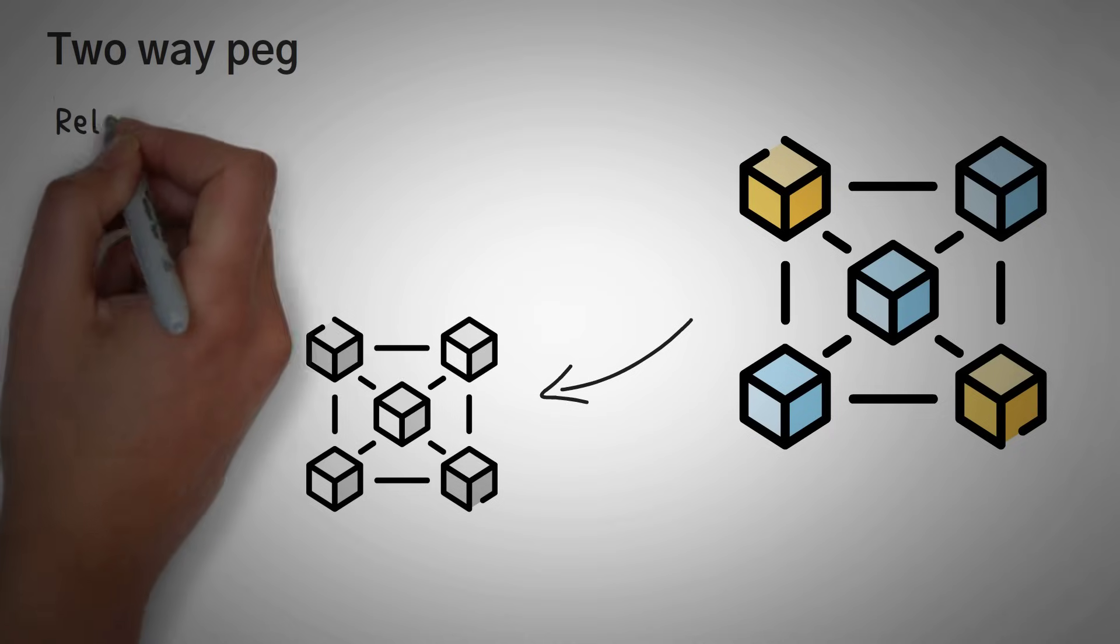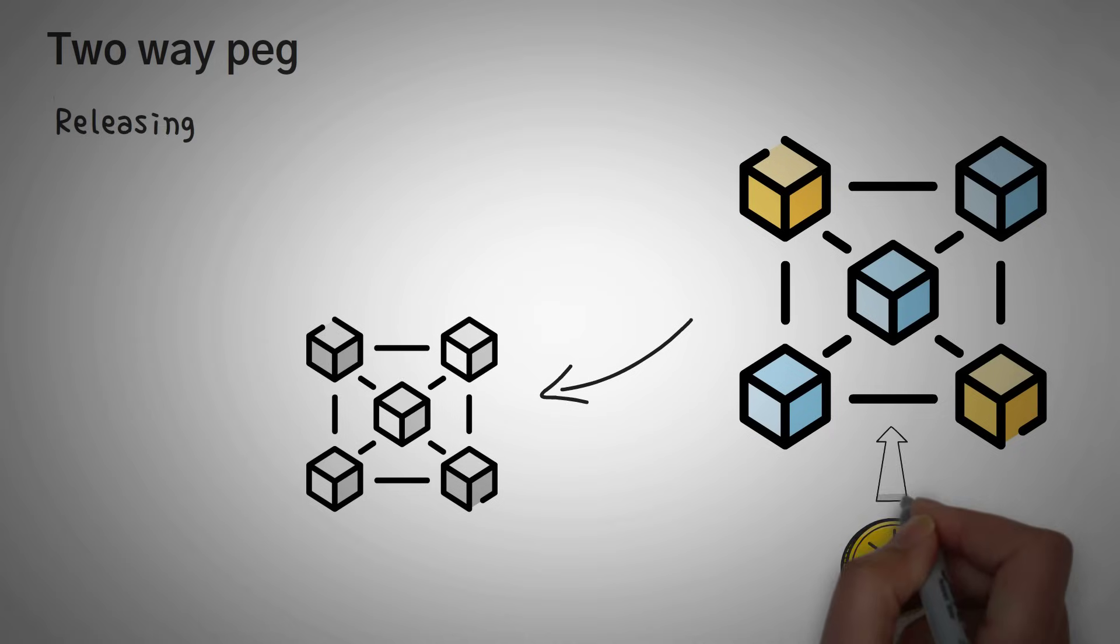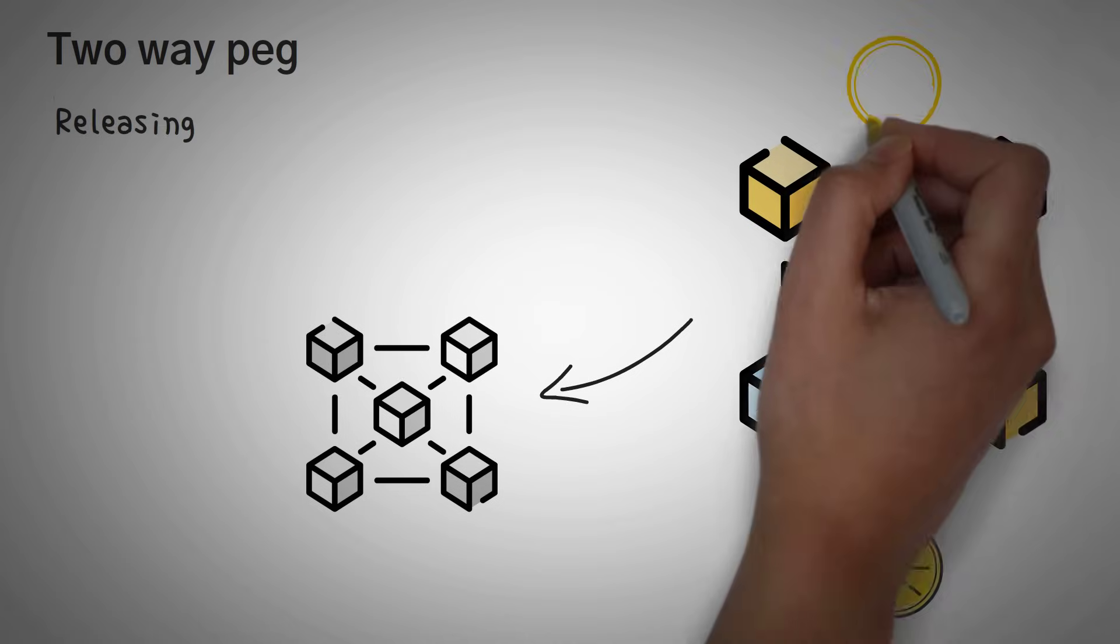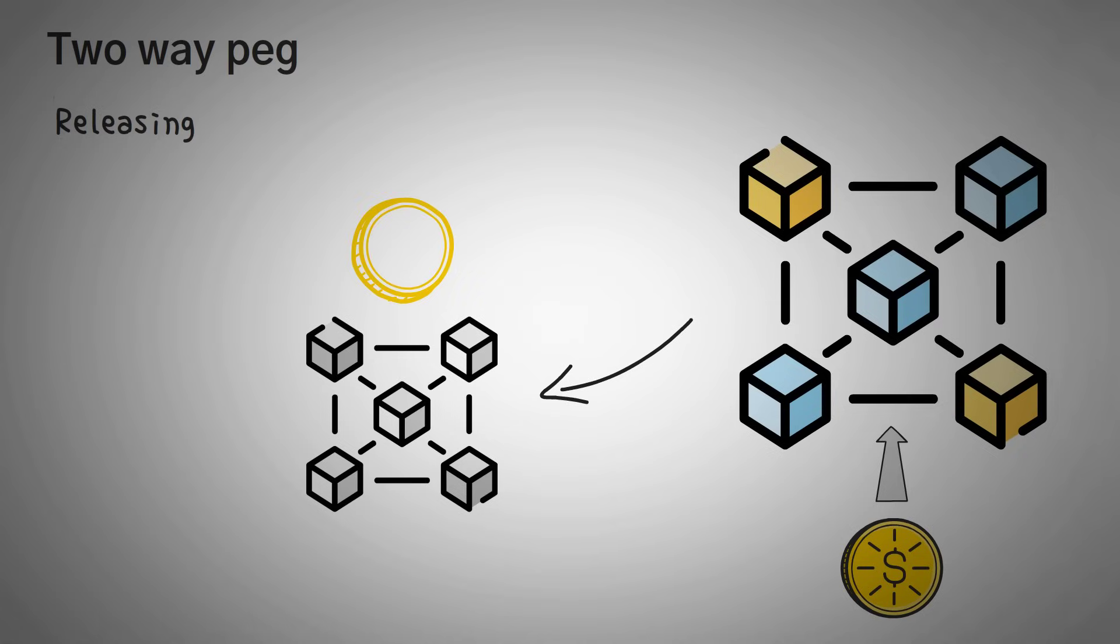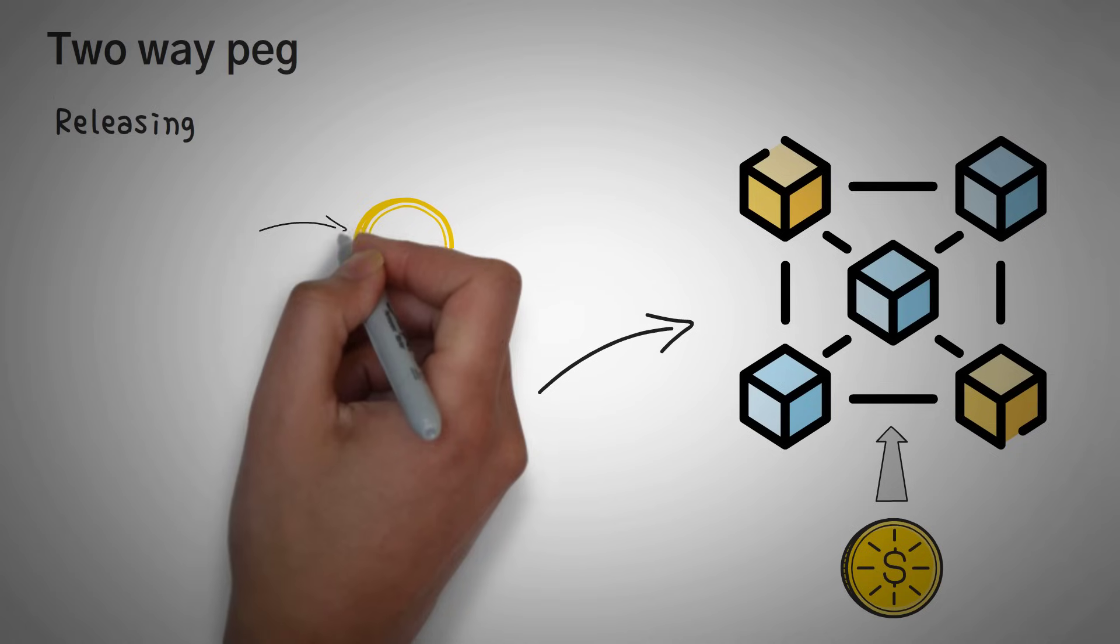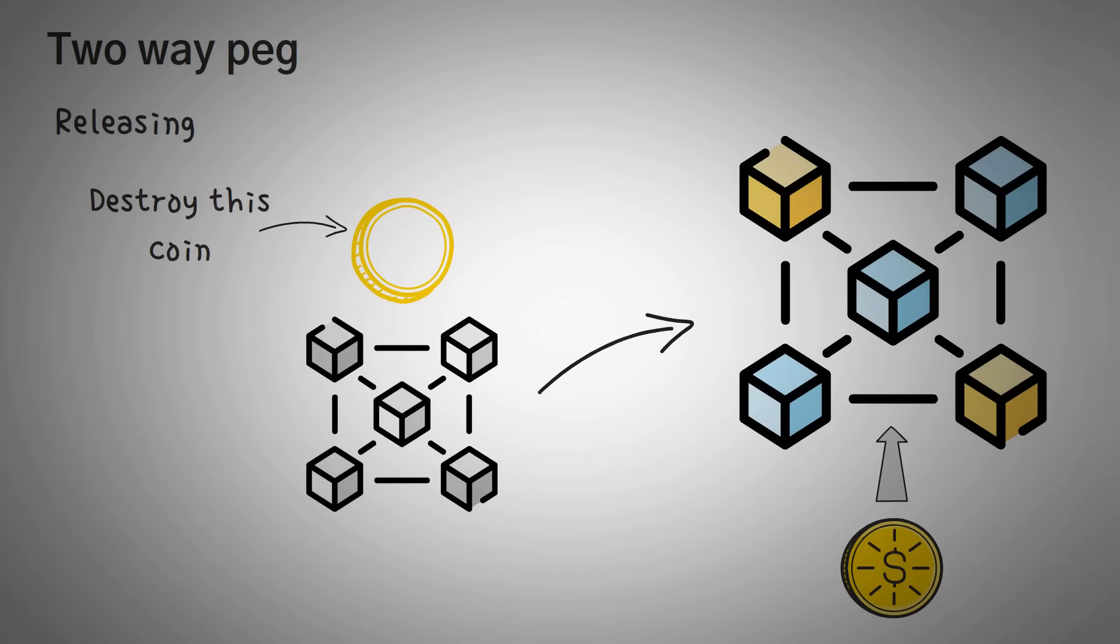The second part of this peg is called releasing. So when you locked up your coins and tokens on the main chain, the protocol accepted them and actually mint you free coins and tokens on the sidechain that are representations of what you have on the main chain. Then when you want to switch back, you destroy your coins and tokens on the sidechain, and you get to release your funds on the main chain.